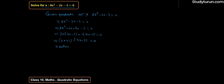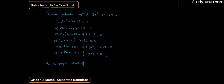Since the product of 2 factors is 0, either 2x + 1 = 0 or 4x - 3 = 0. So you can see either x = -1/2 or x = 3/4. Hence, the required values of x are -1/2 and 3/4.